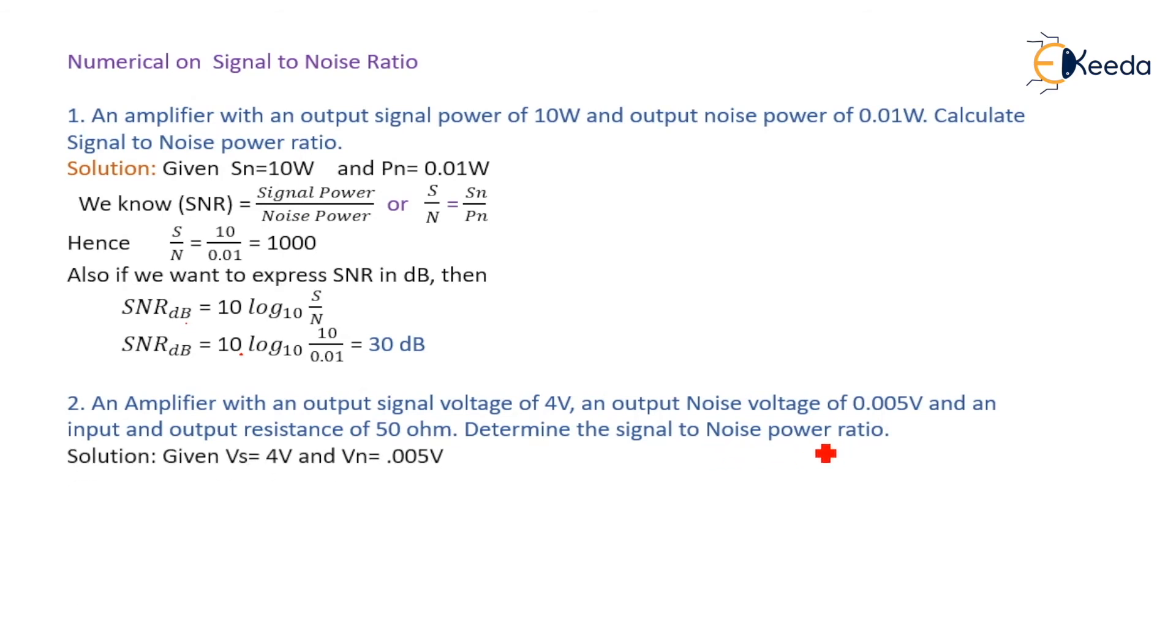Let us see the solution. What is given? Vs equal to 4 V and Vn equal to 0.005 V. We know the formula for SNR in dB in terms of voltage given. See the difference, in the earlier one it was power given. Here, the voltages are given.